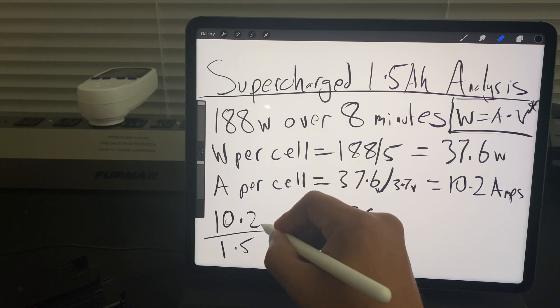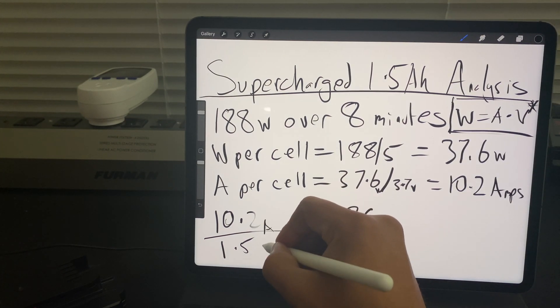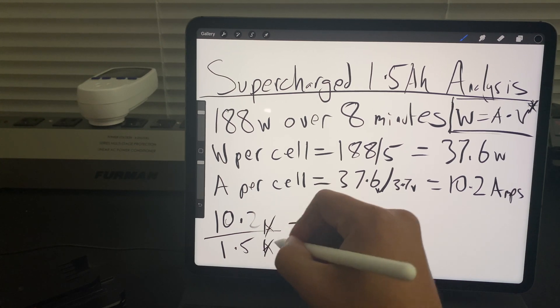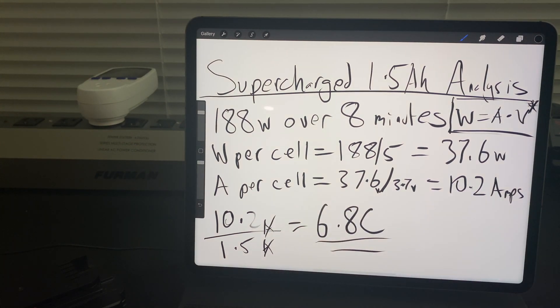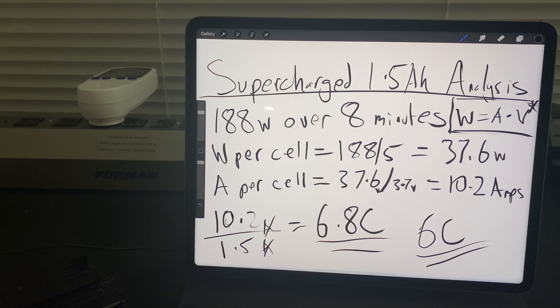And this should be amps. Let's knock out the 0.8 and we'll call it a 6C charge actually going to the cell. A 6C charge is pretty high. So ideally you should be charging this at 1C which would be 1.5 amps and we are booking it at 10.2.